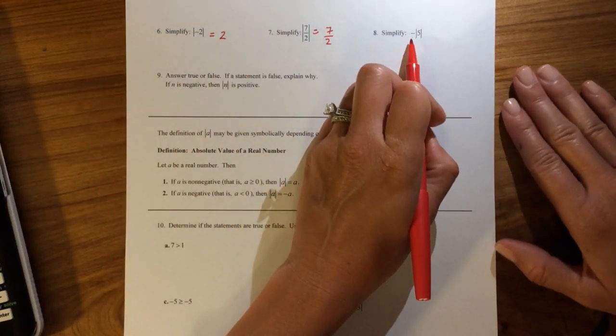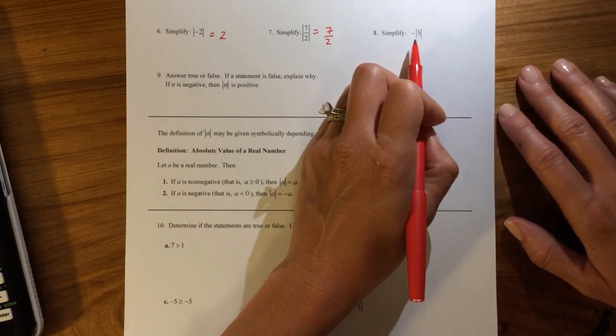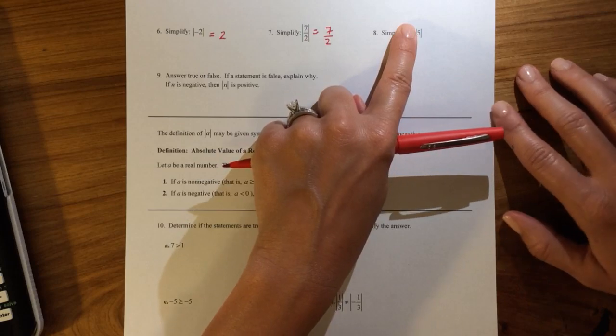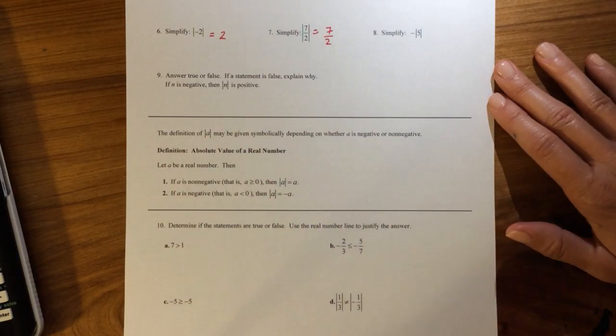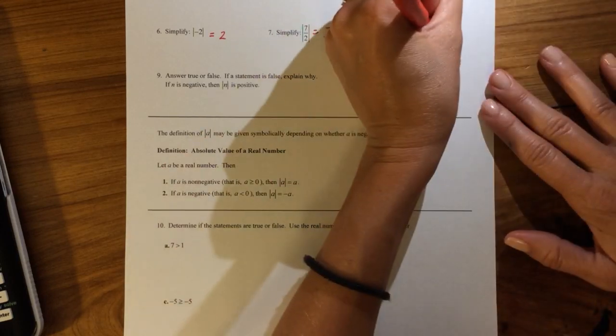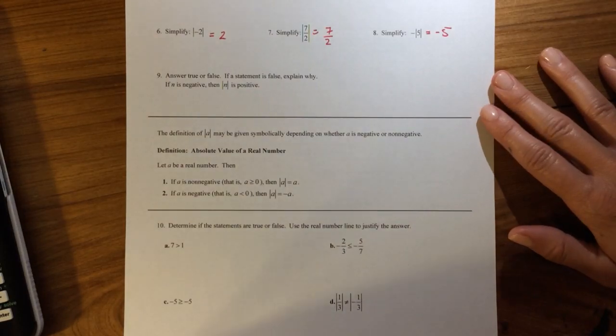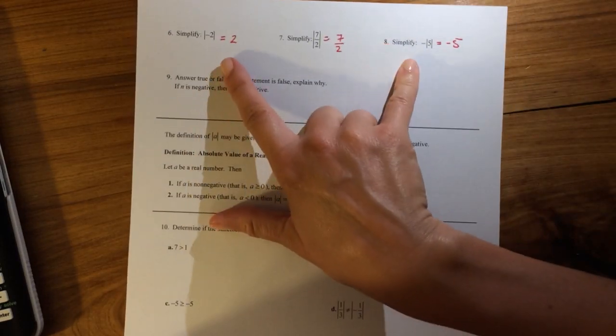Notice here with 8, where's the negative? Inside or outside? Outside. So kind of ignore the negative first. Evaluate the absolute value of 5, which is 5. Now tack on the negative. So it's kind of like a 1-2 step. So this is negative 5, because what's the difference between 8 and 6? The placement of the negative.